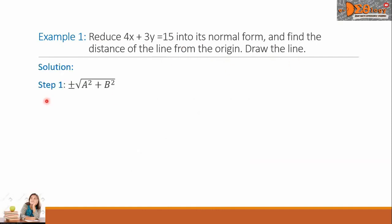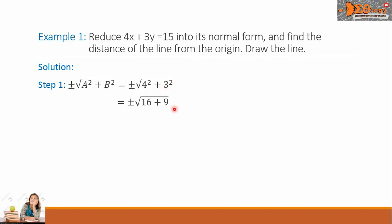For our solution, step 1 is to compute plus or minus the square root of a squared plus b squared. Getting the corresponding values, we have plus or minus the square root of 4 squared plus 3 squared. Simplifying: 4 squared is 16, plus 3 squared is 9, so the square root of 16 plus 9 is the square root of 25.